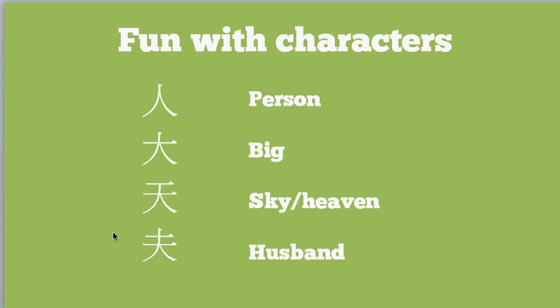Let's start with some fun with characters. When you first start to learn characters it's a bit difficult because they start to look a lot like each other after a while. One of the techniques people use for learning characters is to try and make up stories or to see a story in the character. These are four very simple characters but they give you kind of the idea of what's going on. The first picture here is a picture of a person and if you look at it, it kind of could be a person.